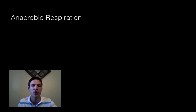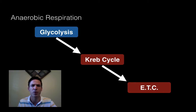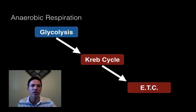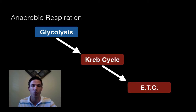If you recall from a previous discussion about cellular respiration, there were three steps to it: the first step called glycolysis, followed by the Krebs cycle, and then the electron transport chain. Glycolysis was an anaerobic process — this first step didn't require oxygen. It wasn't until we got into the mitochondria with the Krebs cycle and the electron transport chain that oxygen was required, making those aerobic processes.